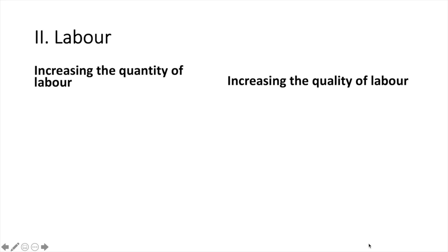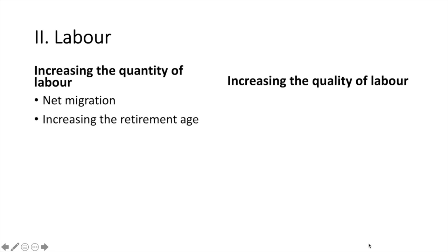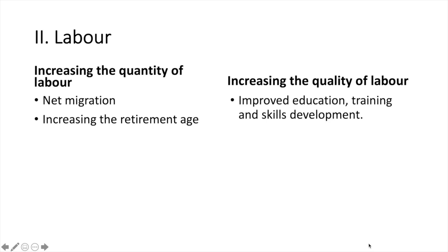Also, advances in fertilizer that would result in increasing crop yields would be another example. To increase the quantity of labour, an economy would need to have positive net migration — more people moving in than leaving. They could also raise the retirement age, which would increase the size of the labour force. To increase the quality of labour, the focus should be on developing human capital through better education, training and skills development, making labour more productive.